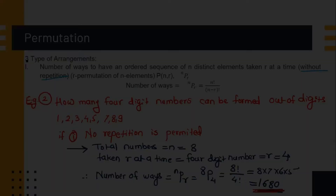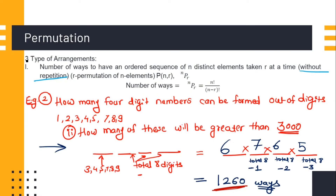Additionally, how many of these will be greater than 3000? Repetition is still not considered. Among all the 4-digit numbers formed, we have to calculate how many will be greater than 3000. Consider the digit places: units place, tens place, hundreds place, and thousands place.